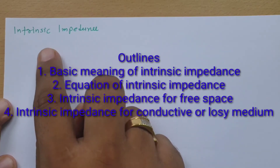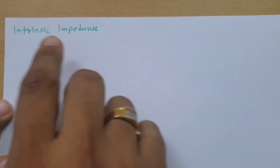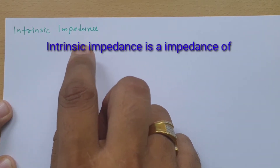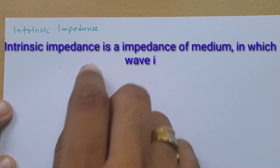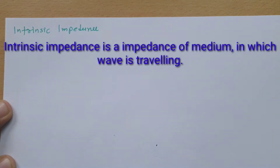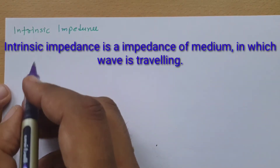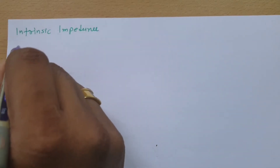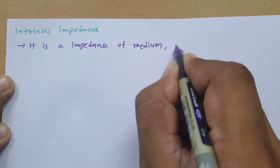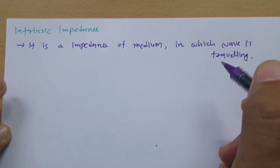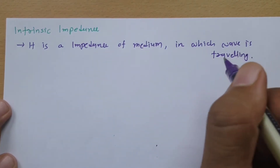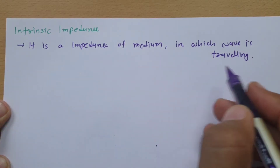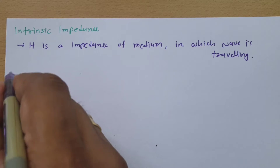First of all, what is intrinsic impedance? Intrinsic impedance is the impedance of the medium in which a wave is traveling. So based on the medium, we can define intrinsic impedance — it is purely based on the medium.